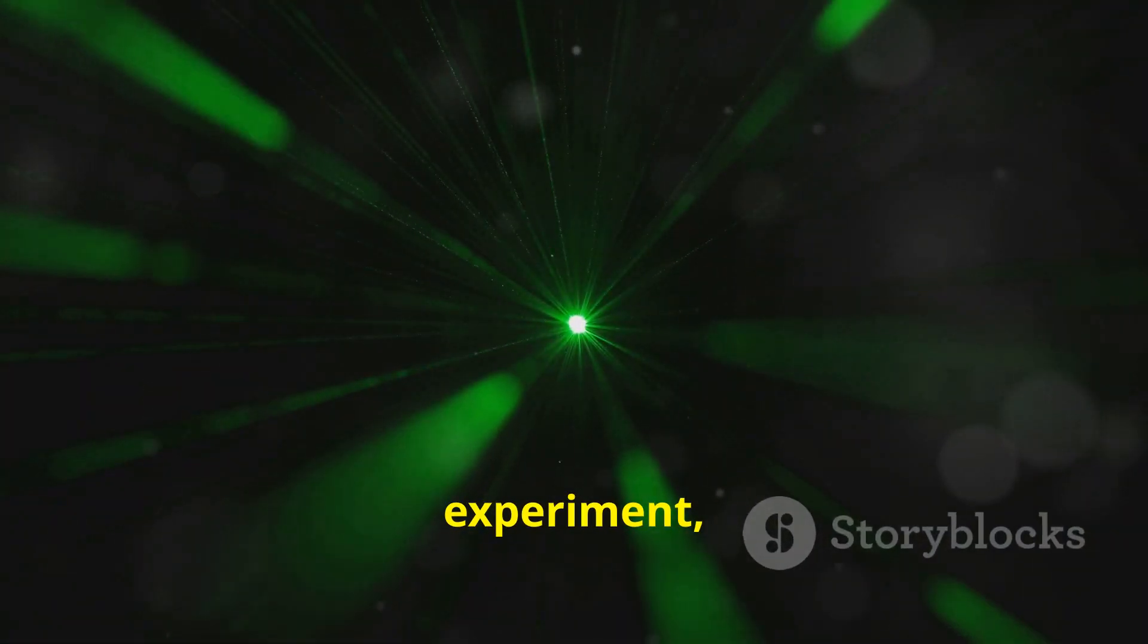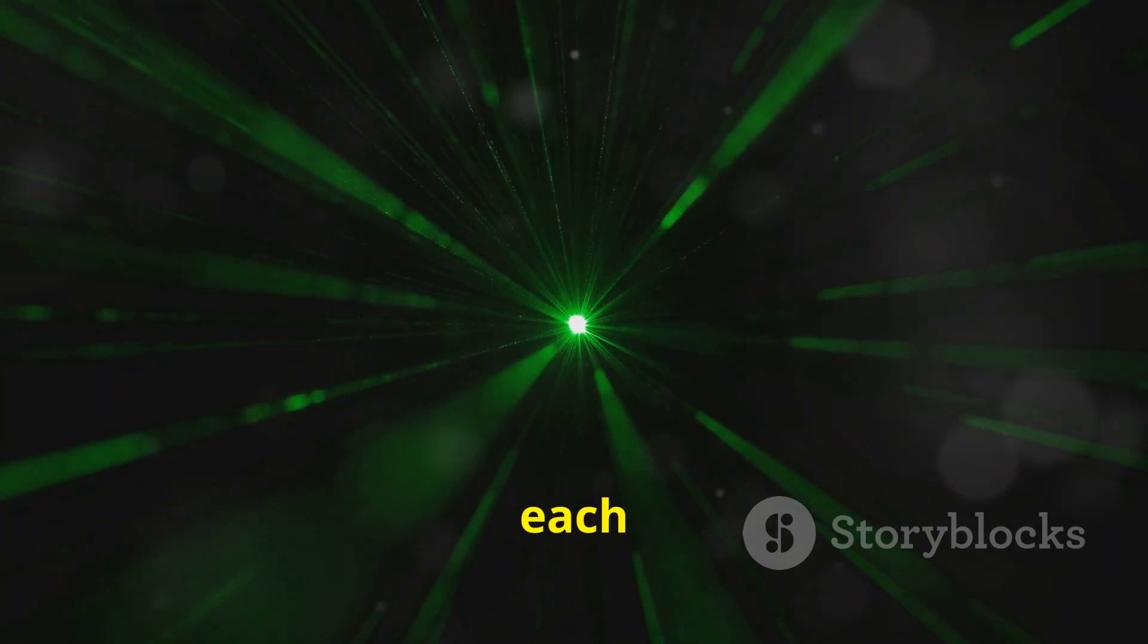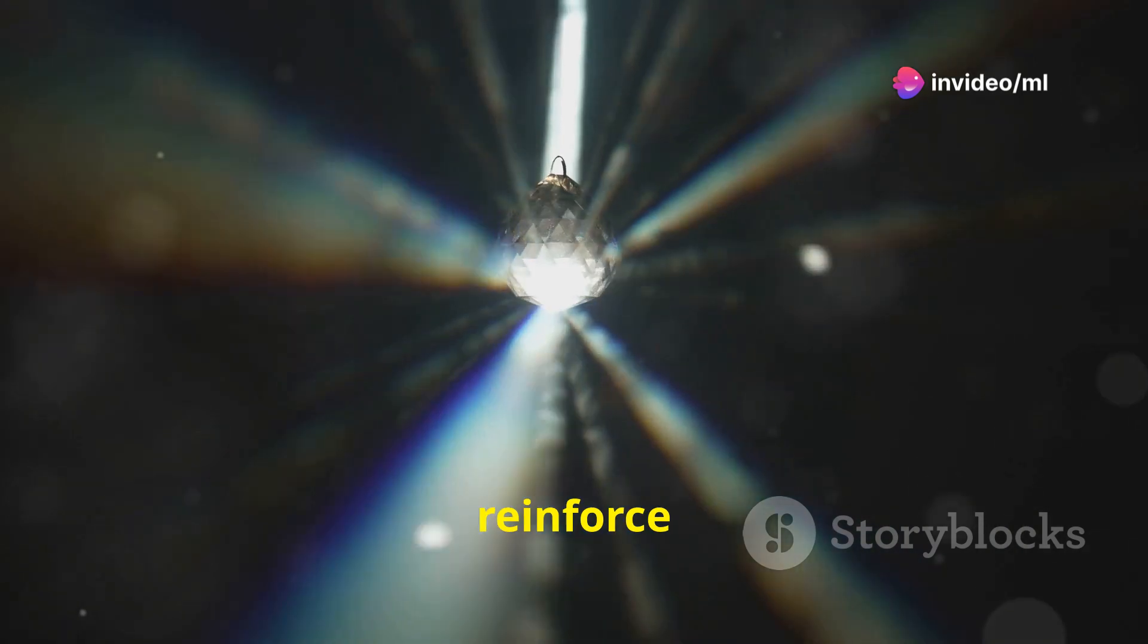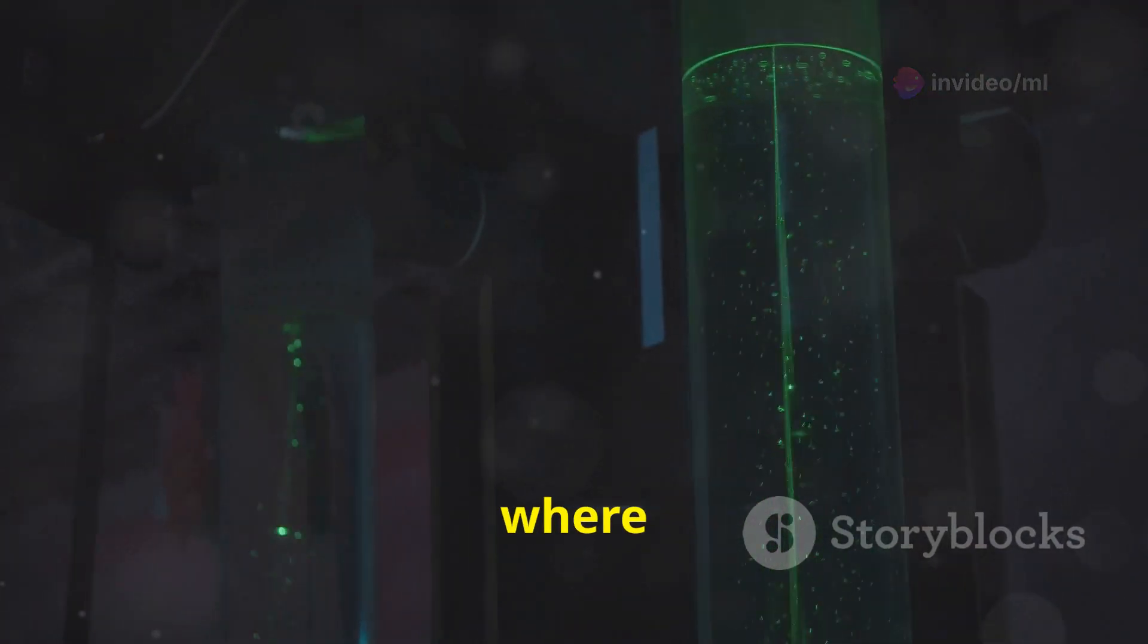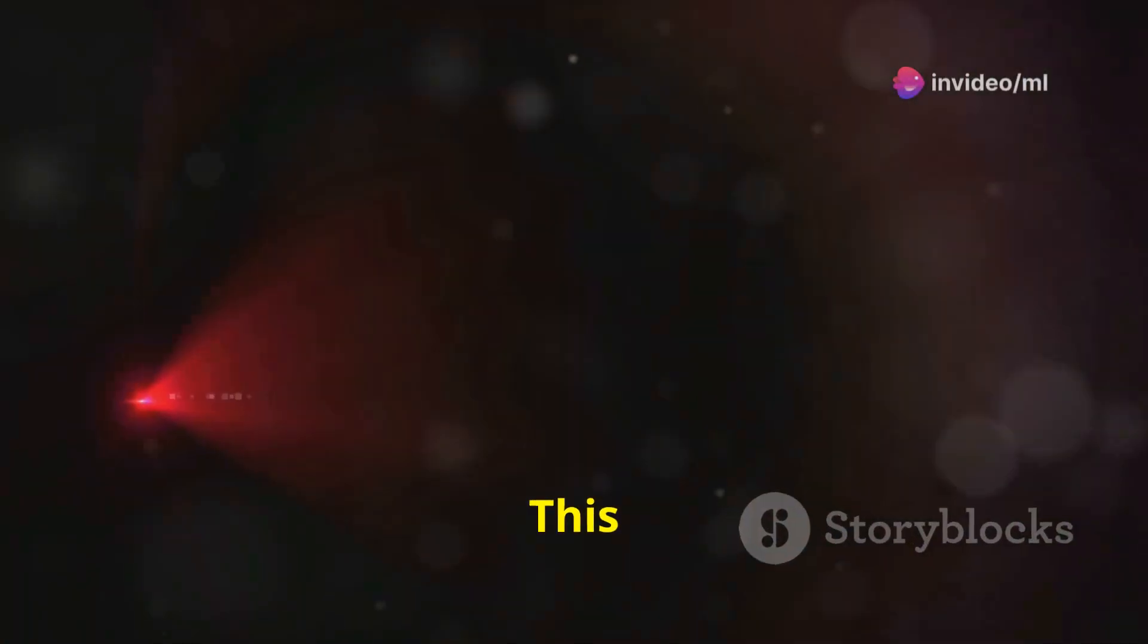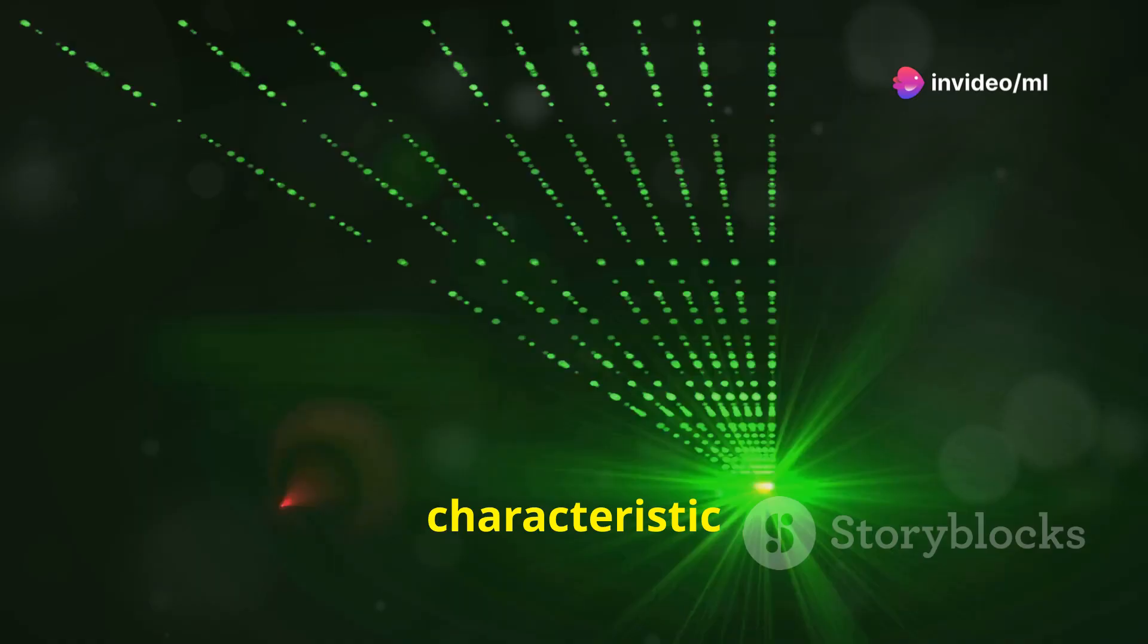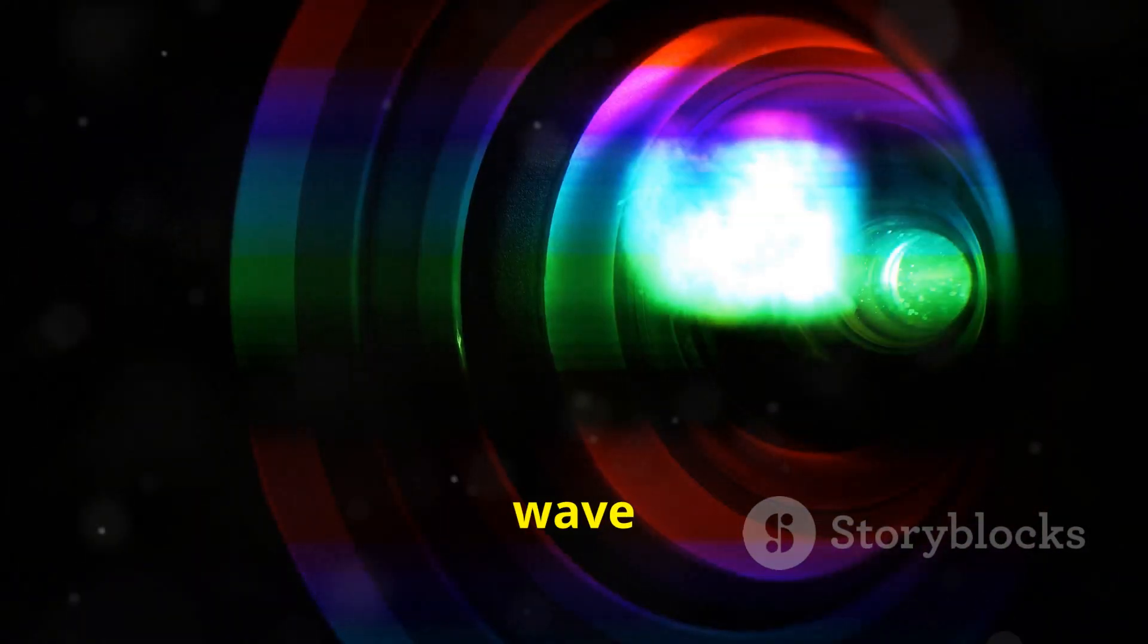In the double slit experiment, the light waves diffracting from the two slits interfere with each other. In regions where the crests of the waves coincide, they reinforce each other, creating a bright band on the screen. In regions where the crest of one wave coincides with the trough of another wave, they cancel each other out, creating a dark band. This interplay of constructive and destructive interference is what gives rise to the characteristic interference pattern observed in the double slit experiment. It's a beautiful demonstration of the wave nature of light.